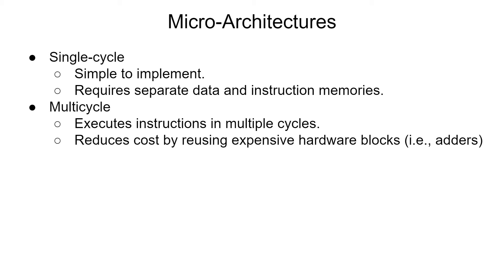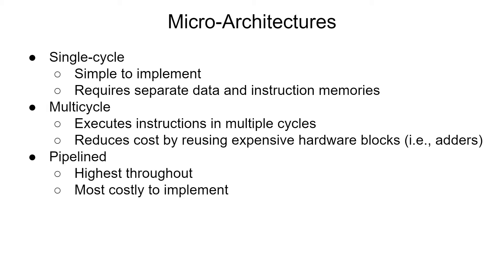The multi-cycle microarchitecture executes an instruction in multiple cycles, requires only a single consolidated memory, and reuses expensive hardware blocks to reduce costs. Pipeline microarchitecture executes multiple instructions at once, thus increasing throughput, but requires additional logic to handle the additional instructions.